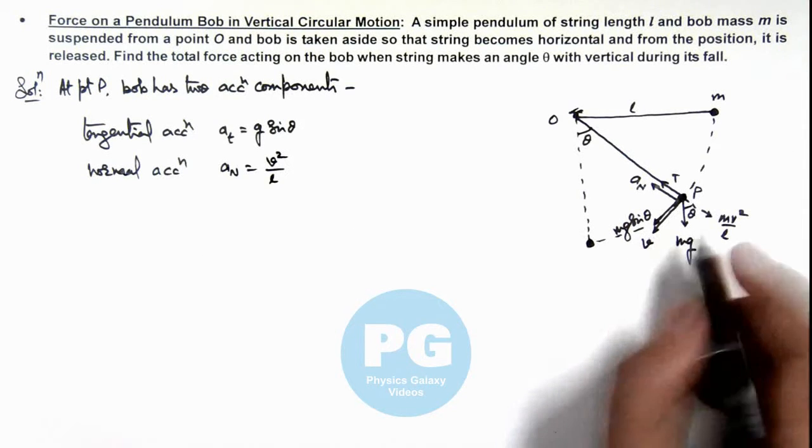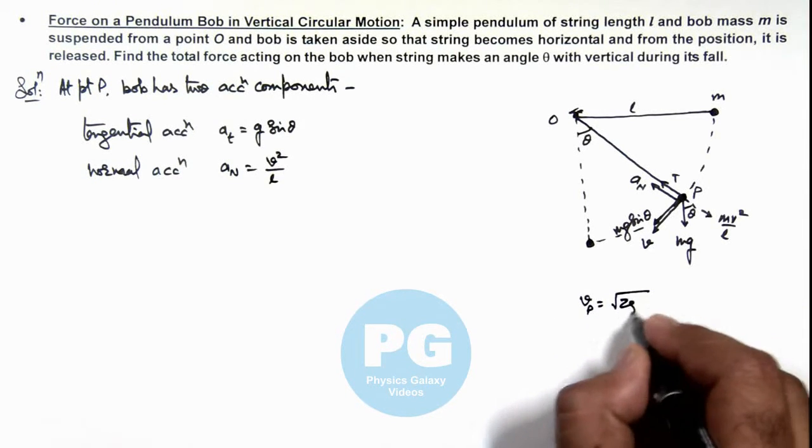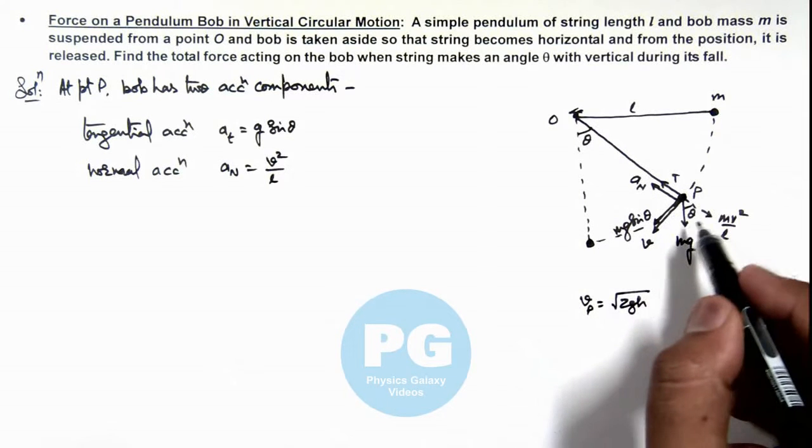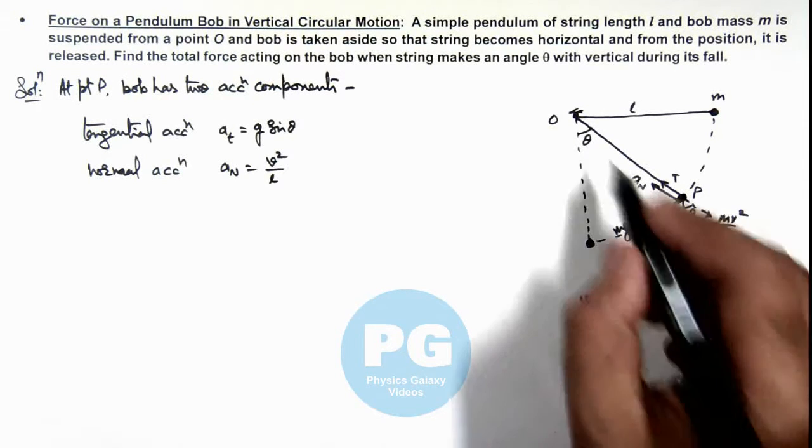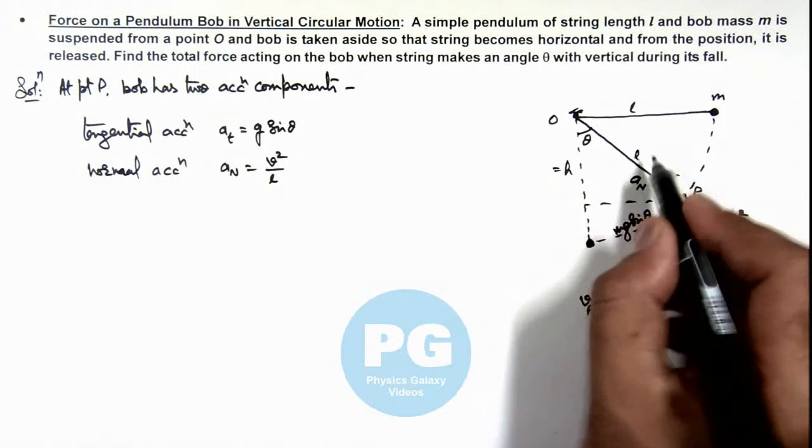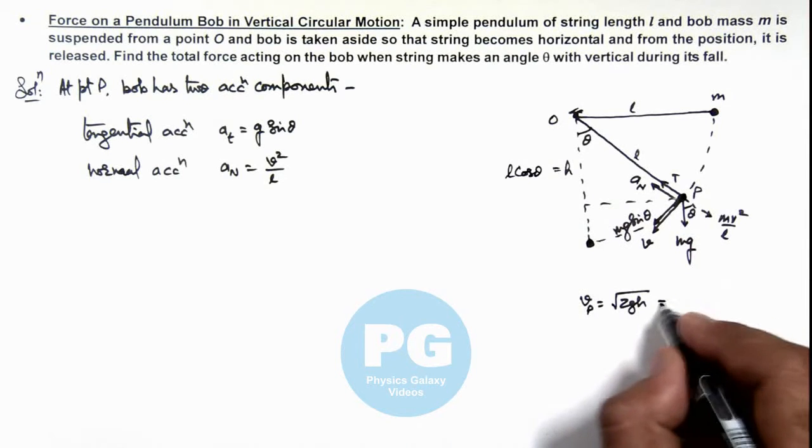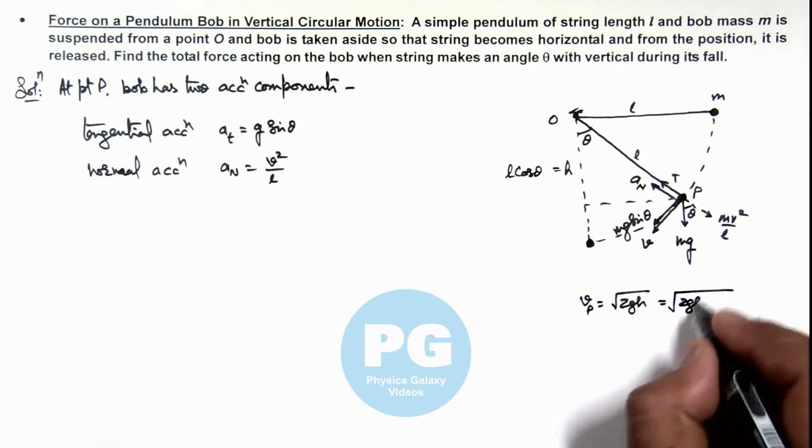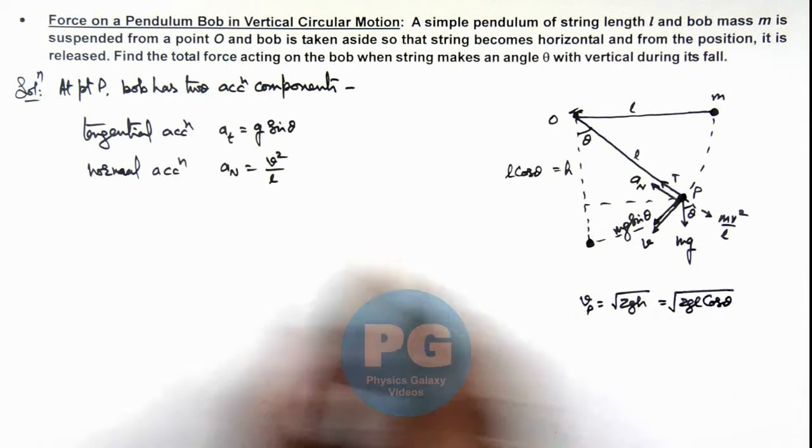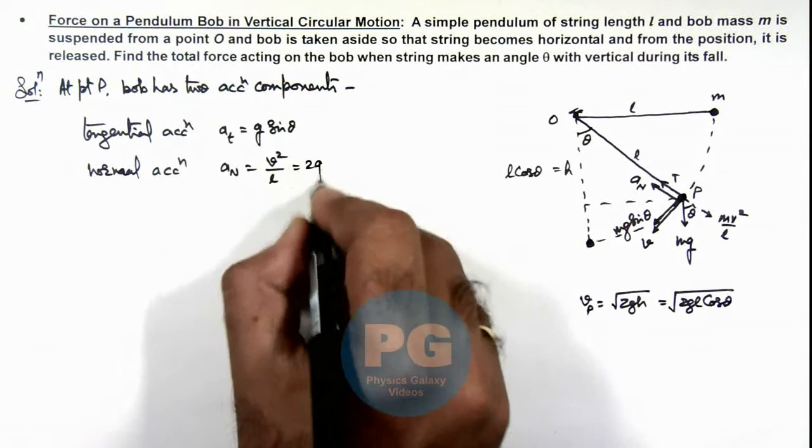And the speed we can calculate at point P as root 2gh, because only due to gravity it is accelerating. And the height to which it has fallen, h, can be written as - since string length is l - it is l cos theta. So we can write it root 2gl cos theta. So v² by l will give us the normal acceleration 2g cos theta.